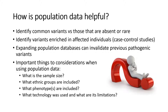So how is population data helpful? It allows us to identify which variants are common, and therefore generally thought to be benign for traditional Mendelian disease, from those that are rare or even absent from these large datasets. It's important to remember that rarity doesn't automatically mean that a variant is pathogenic or disease-causing, only that it is uncommon enough that it is possible.